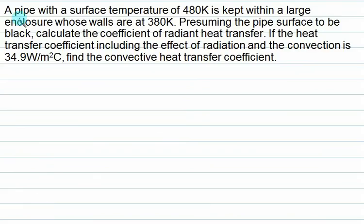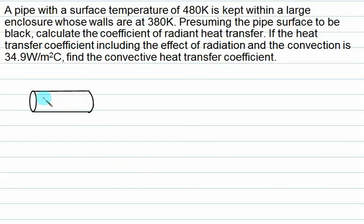A pipe with a surface temperature of 480 K is kept in a large enclosure whose walls are at 380 K. Assuming the pipe surface to be a black body, calculate the coefficient of radiant heat transfer. If the heat transfer coefficient including the combined effect of radiation and convection is 34.9 W/m²·K, find the convective heat transfer coefficient.